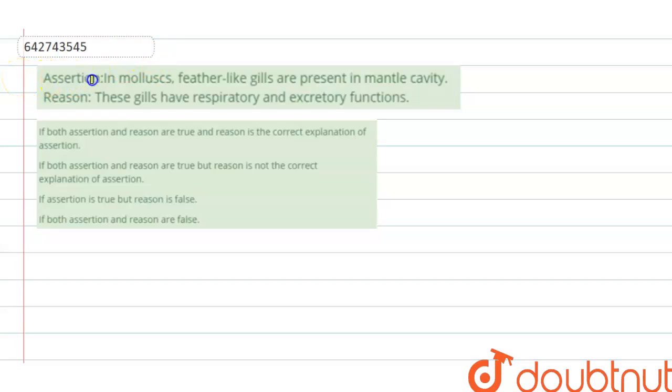The question says that the assertion is: In mollusks, feather-like gills are present in the mantle cavity. And the reason says that these gills have respiratory and excretory functions.